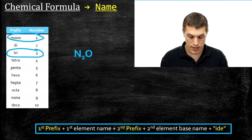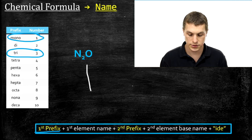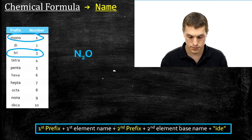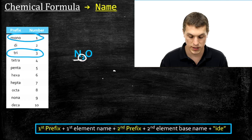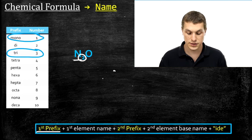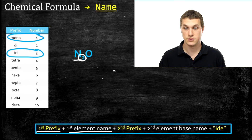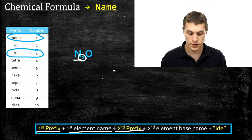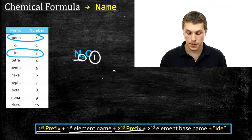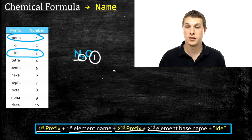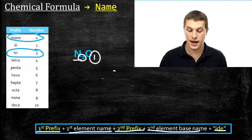The basic formula for naming molecular compounds is: first, write the prefix for the first element listed. For example, if nitrogen is the first element listed, and there are two of them, the prefix would be di. Then write the first element name — nitrogen. Then write the second prefix for the second element. If oxygen has an implied one, that would be mono. Then write the base name of the second element — for oxygen, the base is ox — and add -ide at the end.